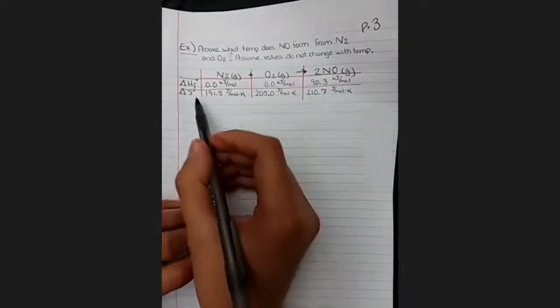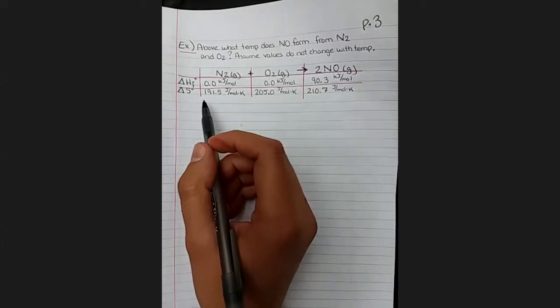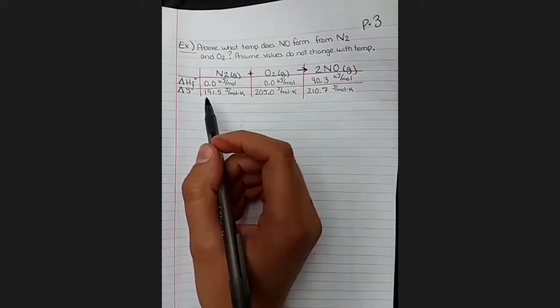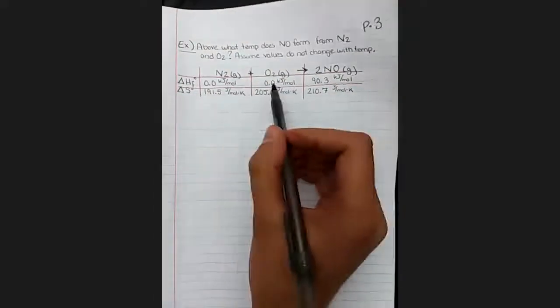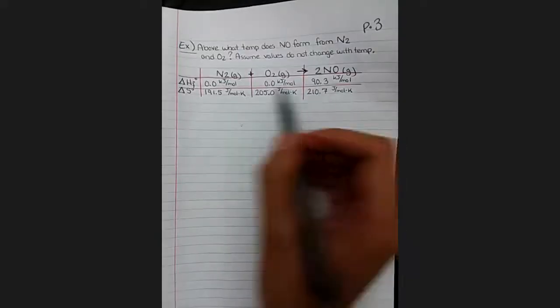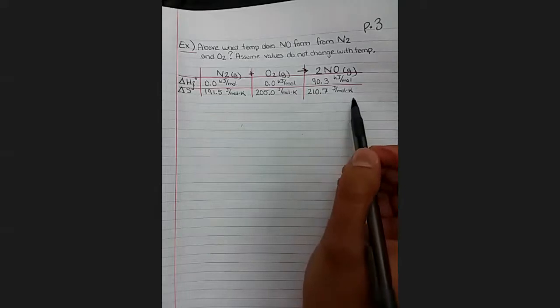So I've done you the favor of looking up the reference values for these numbers from the table. You can usually find these at the back of your textbook or as part of your online homework system. So here's our standard delta H change values and our standard change in S variables. So let's dissect this problem and figure out what exactly we're trying to do here.